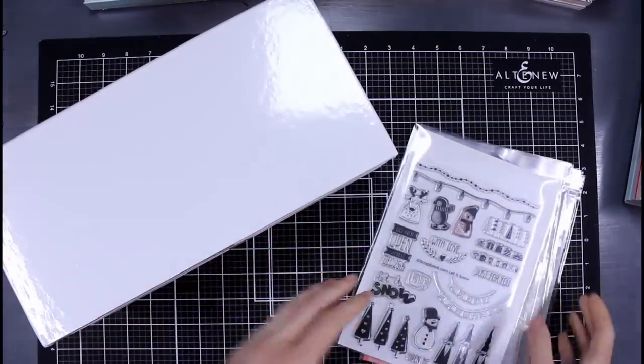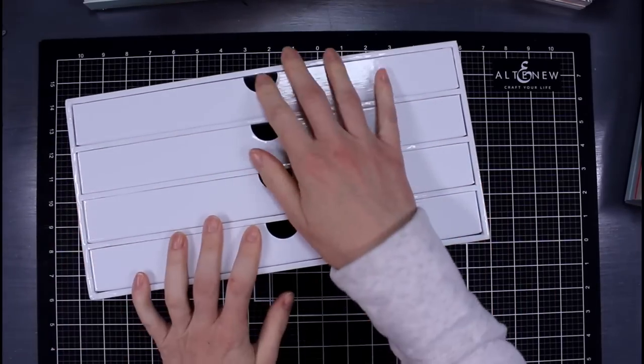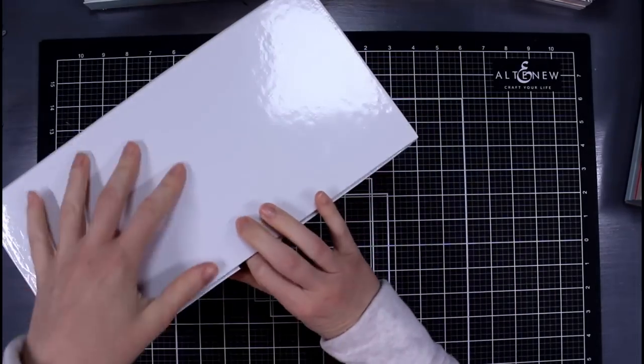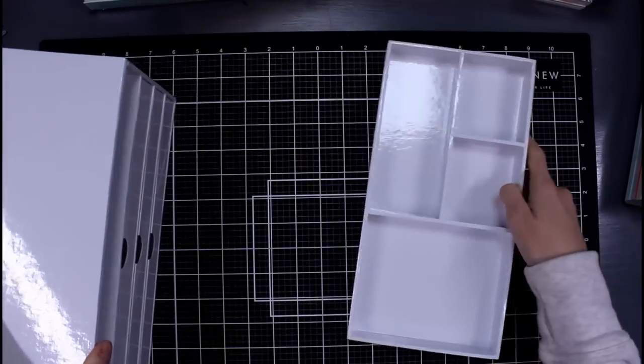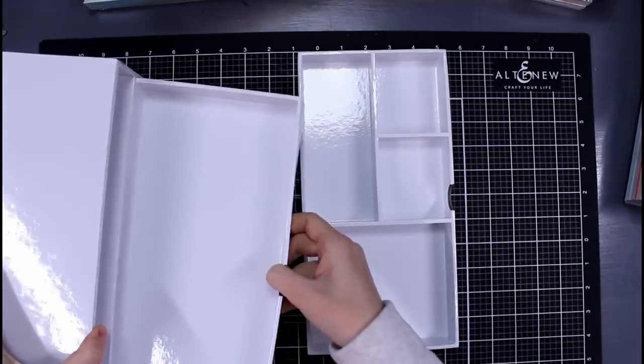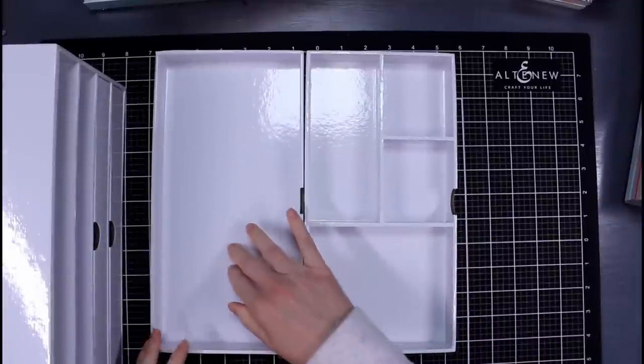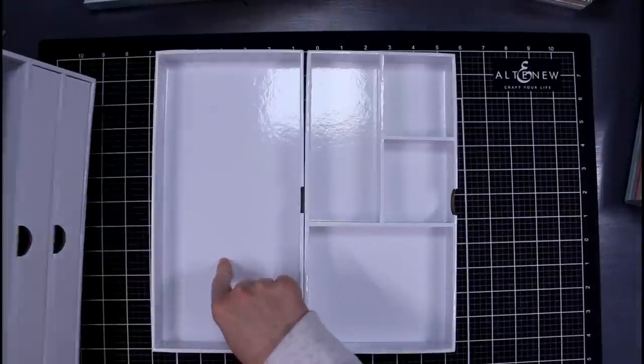The next I have here is this storage unit, again by scrapbook.com, made from the same material. The drawers come out, so you have this drawer with different inserts, which is great. And then you have one with no inserts so you can store things. It has four drawers, so the other two are just like this one.